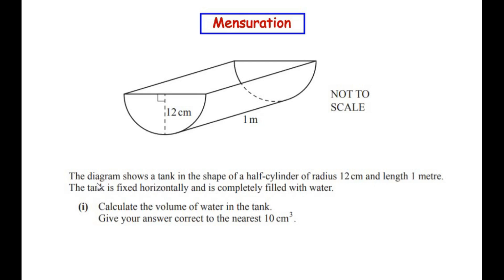The first sub question is: the diagram shows a tank in the shape of a half cylinder of radius 12cm and length 1m. The tank is fixed horizontally and is completely filled with water. Calculate the volume of the water in the tank, and give your answer correct to the nearest 10 cm³.